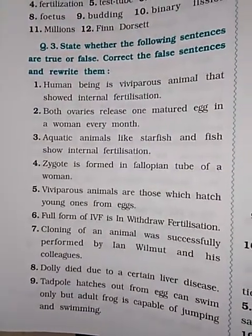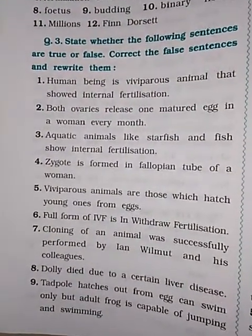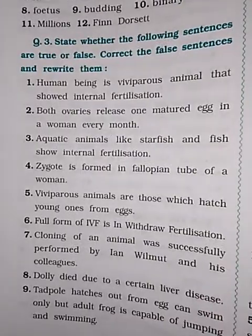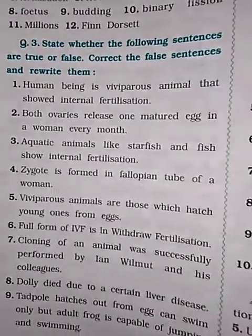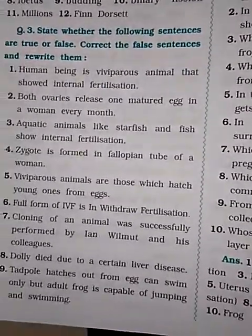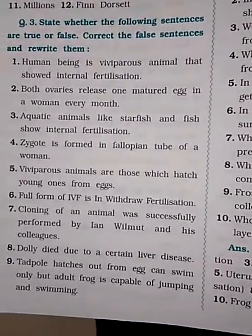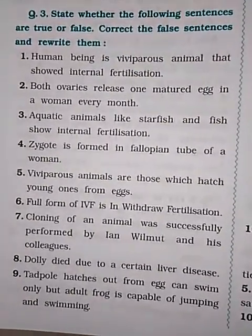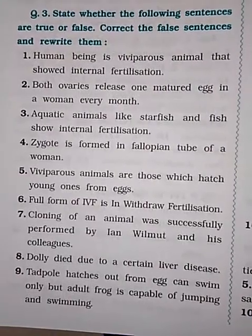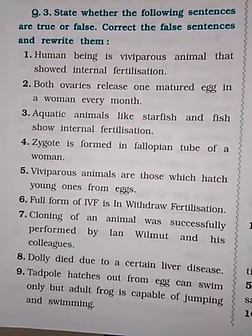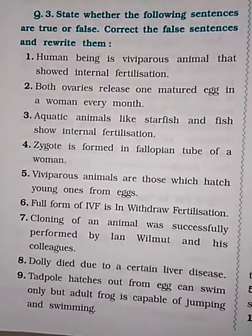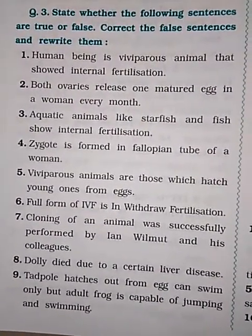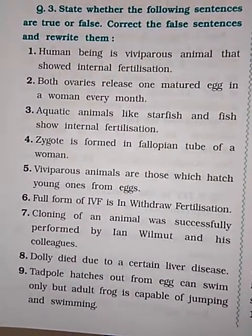Question: Human being is a viviparous animal that shows internal fertilization. Answer: True. Question: Both ovaries release one matured egg in a woman every month. Answer: False.